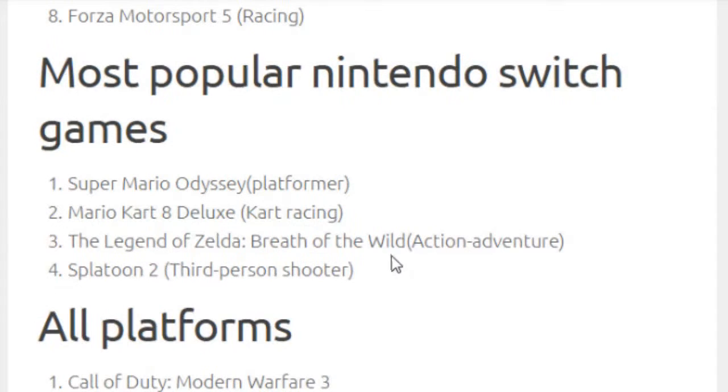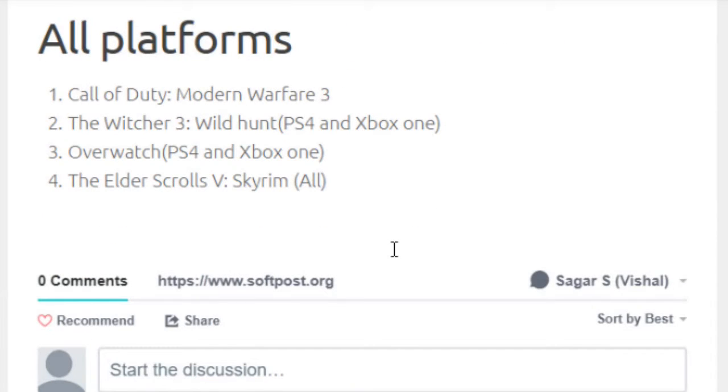If you look at Nintendo Switch games, we have got Super Mario Odyssey, Mario Kart 8 Deluxe, The Legend of Zelda: Breath of the Wild, Splatoon 2. These are most popular Nintendo Switch games. If you look at all platforms games, we have got Call of Duty: Modern Warfare 3, Witcher 3: Wild Hunt, Overwatch, and Elder Scrolls 3: Skyrim. These games can be played on any platform like Xbox, Nintendo, or PS4.